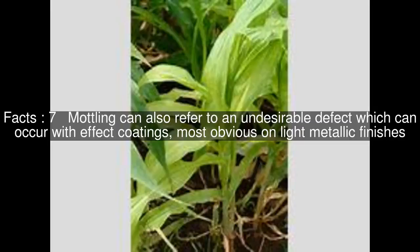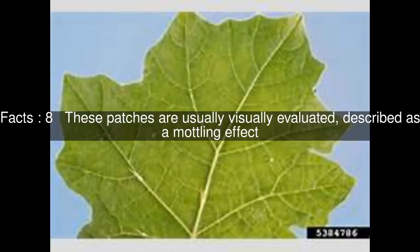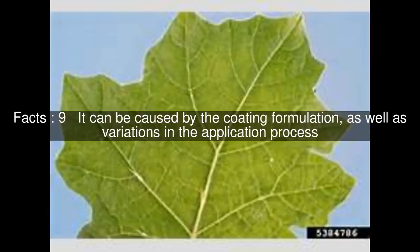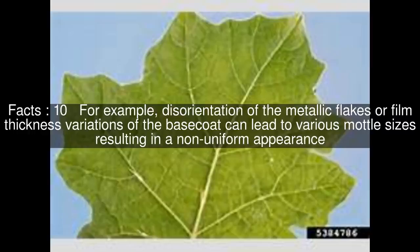Mottling can also refer to an undesirable defect which can occur with effect coatings, most obvious on light metallic finishes. These patches are usually visually evaluated, described as a mottling effect. It can be caused by the coating formulation as well as variations in the application process. For example, disorientation of the metallic flakes or film thickness variations of the base coat can lead to various mottling sizes.